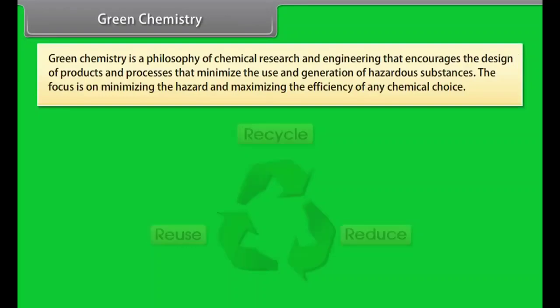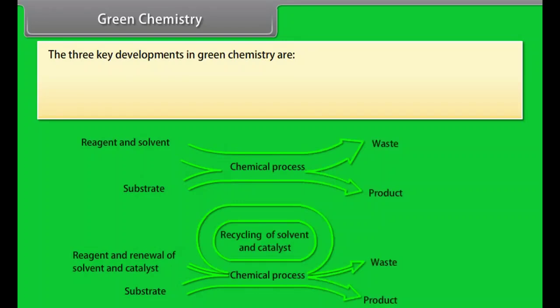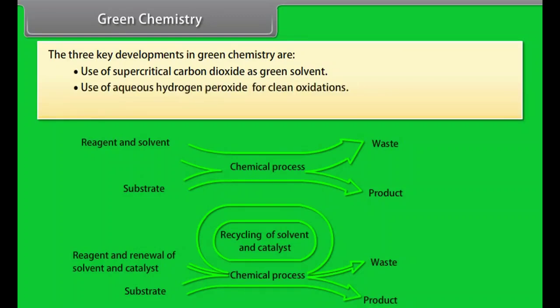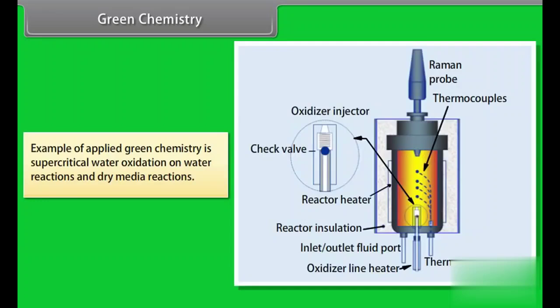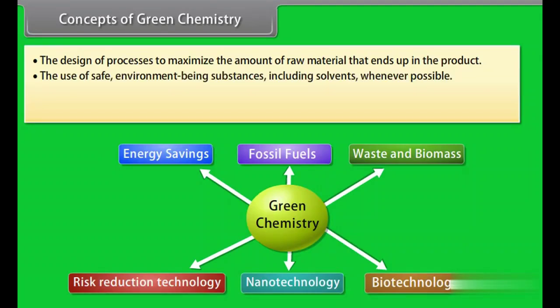Green chemistry. Green chemistry is a philosophy of chemical research and engineering that encourages the design of products and processes that minimize the use and generation of hazardous substances. The focus is on minimizing the hazard and maximizing the efficiency of any chemical choice. The three key developments in green chemistry are: use of supercritical carbon dioxide as green solvent, use of aqueous hydrogen peroxide for clean oxidations, use of hydrogen in asymmetric synthesis. Examples of applied green chemistry include supercritical water oxidation, water reactions, and dry media reactions. Concepts of green chemistry: the design of processes to maximize the amount of raw material that ends up in the product, the use of safe environment-being substances including solvents whenever possible, the design of energy efficient processes, and the best form of waste disposal is not to create it in the first place.